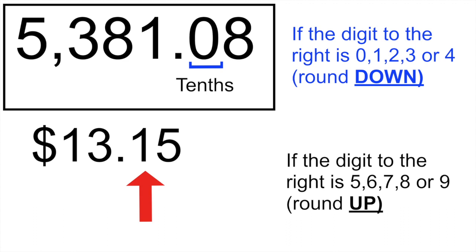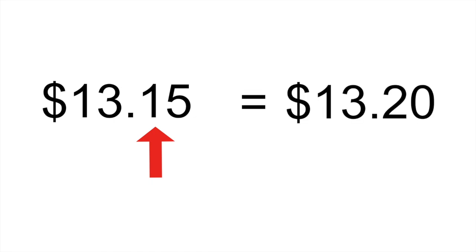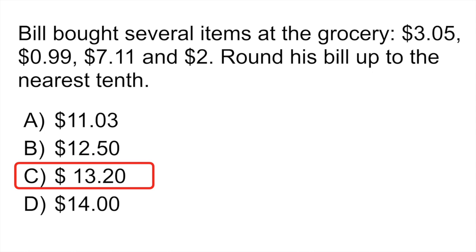So in this case, our number to the right of the number that we have to round up is a five, so we would round up. So it would be thirteen point two, zero. Answer C.